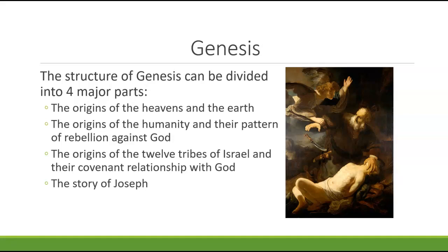The book is also structured around the origins of the 12 tribes of Israel. Jacob, grandson of Abraham, is going to be given the name Israel because he struggles with God, and he continues the covenant relationship with God through his sons. He has 12 sons, and each son is basically the head of a different tribe or clan. All of these trace their relationship back to Israel, to Isaac, and then to Abraham.